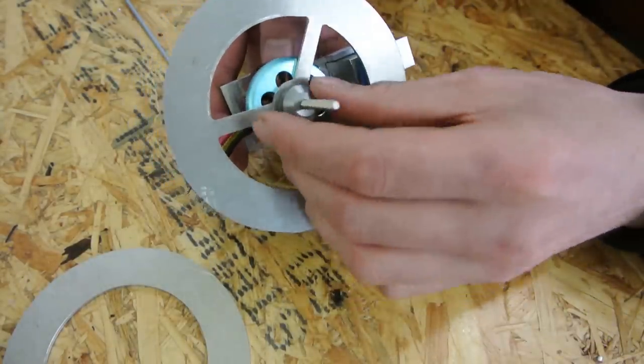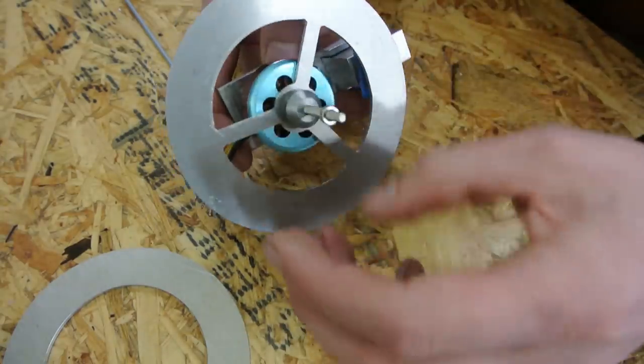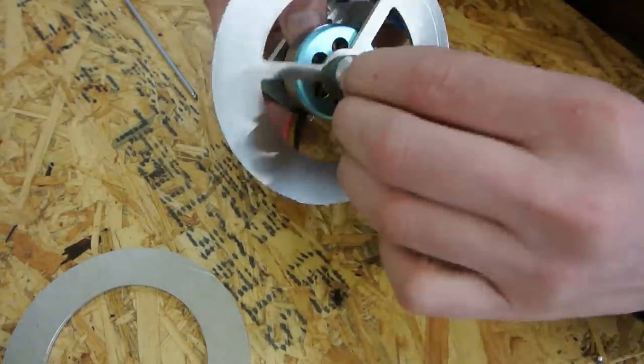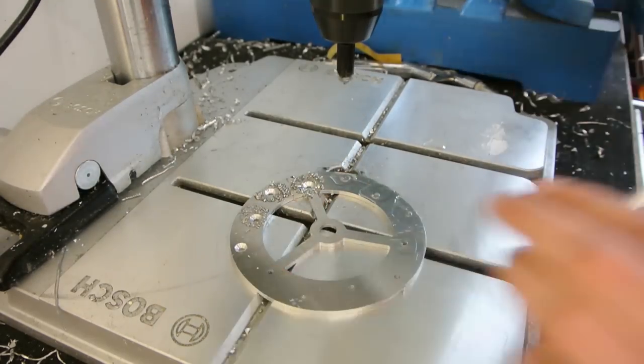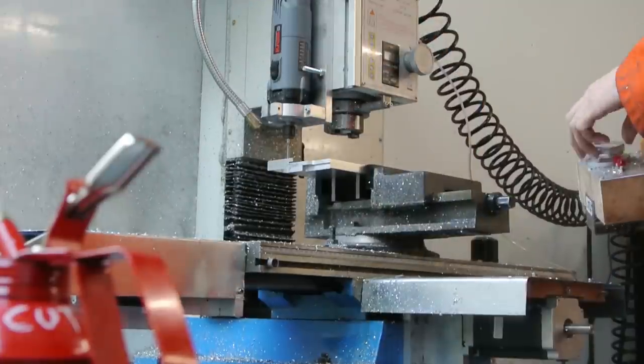In the previous video I started to make the flywheel and the brake construction. If you haven't seen it yet, check it out first. I still had to finish the flywheel and make a bracket for the servo motor.